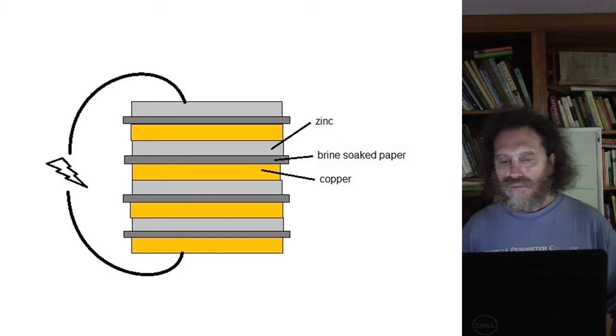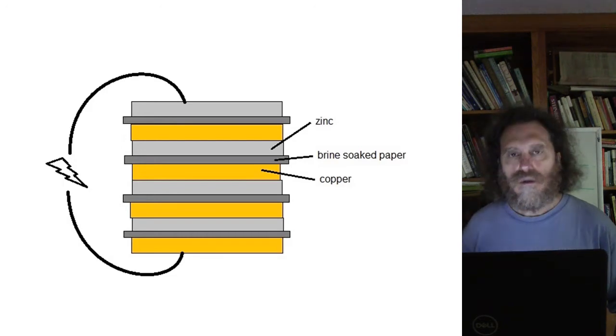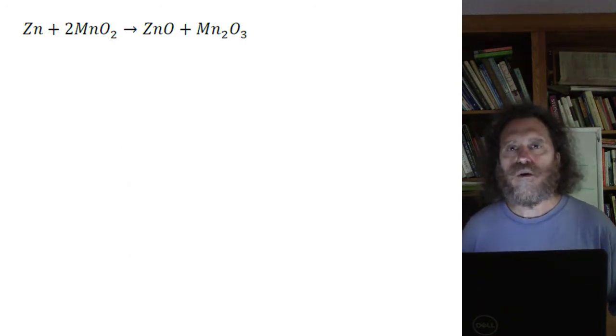Now the chemistry that's going on in here is a little complicated. Let me talk about a slightly different chemistry that occurs in what they call the alkaline batteries that you use in flashlights and other little battery powered things. The most common type of battery is zinc manganese batteries. This chemical reaction takes place in the battery: zinc reacts with manganese dioxide to form zinc oxide and what they call manganese three oxide.